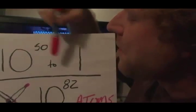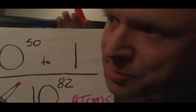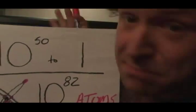In mathematics, anything that is 10 to the 50th power to 1 is considered impossible. It would be an absolute miracle.